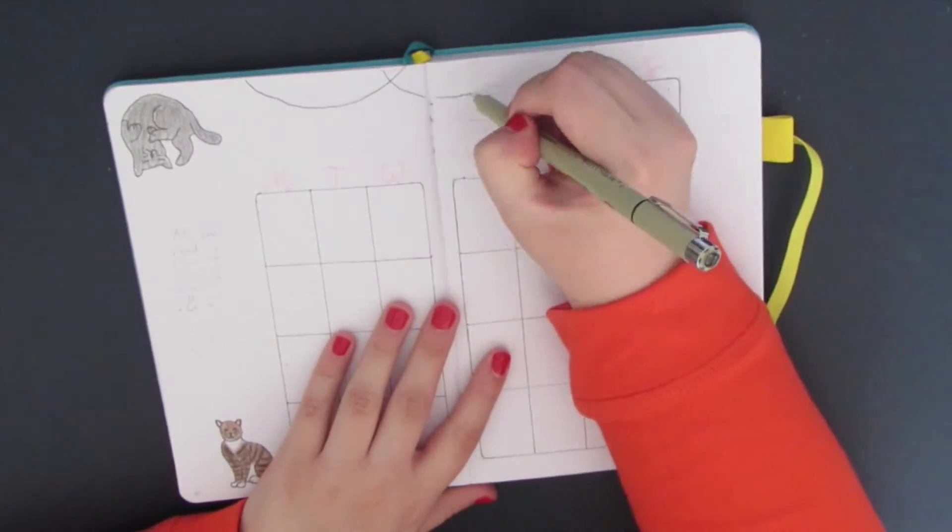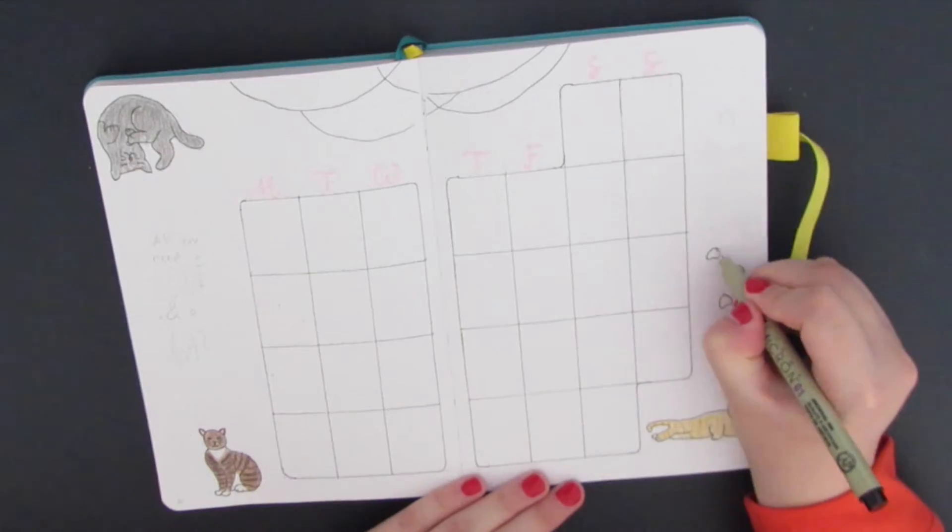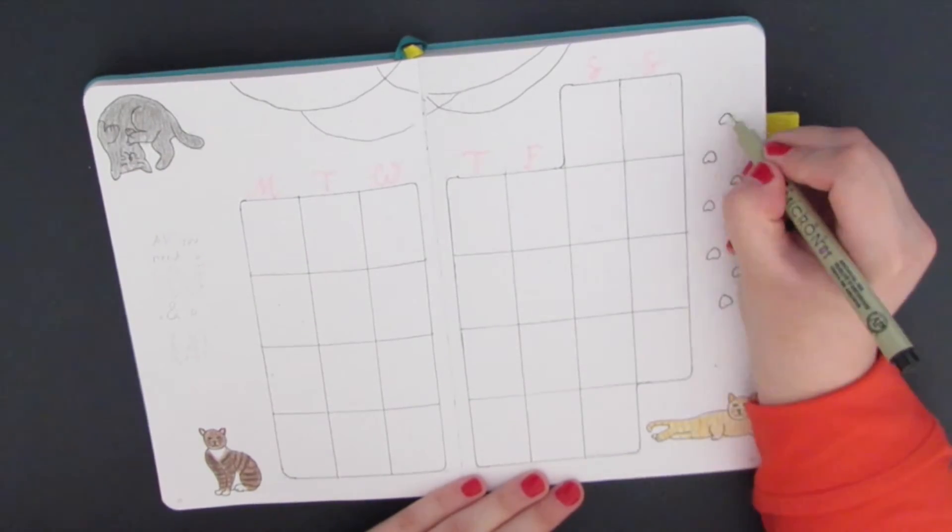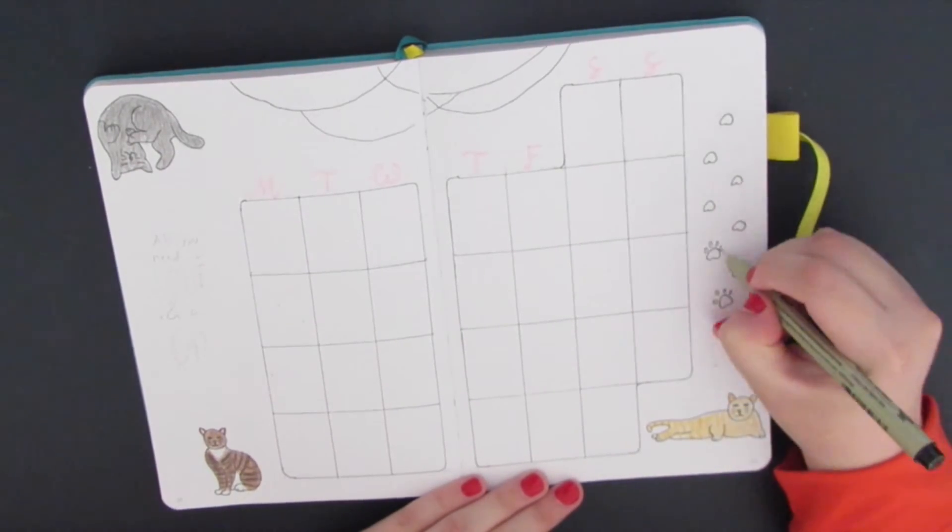Next, I'm drawing the outlines for some more decorations. I'm drawing these curvy lines on the top of the page, some paw prints along the left side, and adding in part of a quilt on the right side.